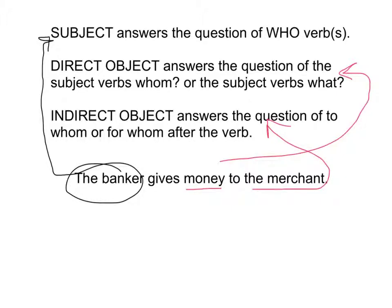In Latin, the subject of the sentence is always in the nominative case. The direct object is in the accusative case. And the indirect object is in the dative case.